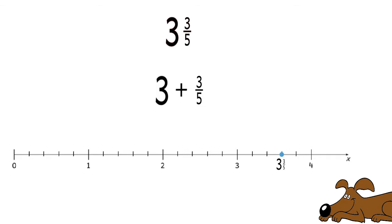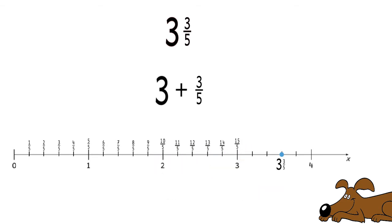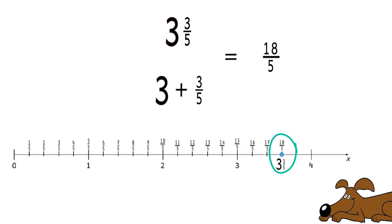Is there any reason we couldn't have just written this as a fraction? Not really. Counting each space on the number line, we can see that 1 is the same as 5 fifths, and 2 is the same as 10 fifths. 3 is the same as 15 fifths, but now we need to add an additional 3 fifths. That gives us 18 fifths.